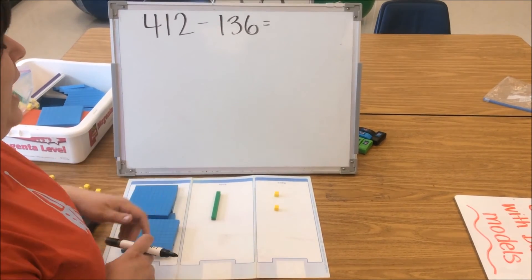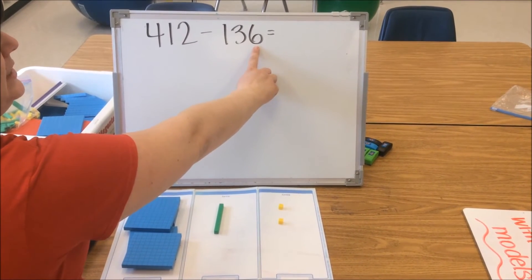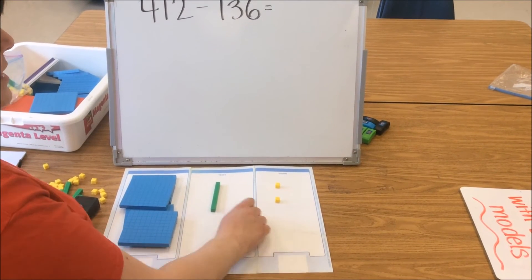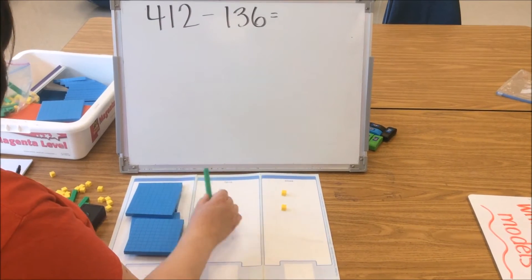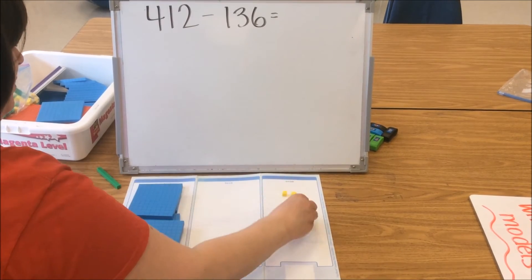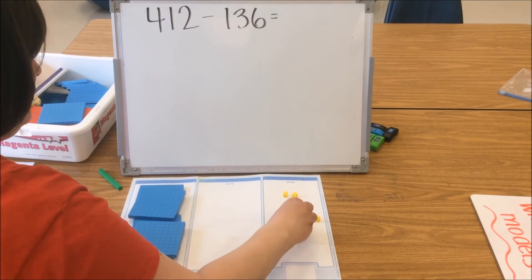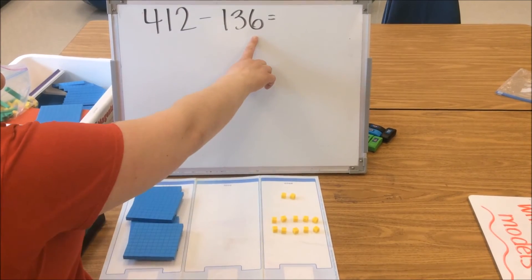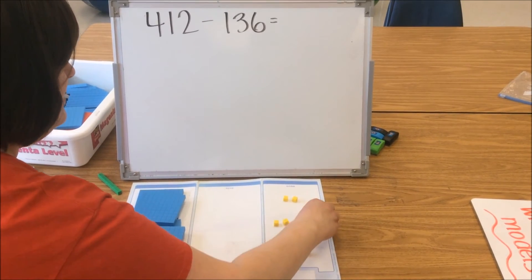So we're going to start by subtracting our ones. We find our ones place in our number and we see we need to subtract 6 ones. However, we don't have 6 ones. So we're going to decompose a 10 — take away this 10 and add 10 ones instead: 1, 2, 3, 4, 5, 6, 7, 8, 9, 10. Now we can take away our 6 ones: 1, 2, 3, 4, 5, 6.